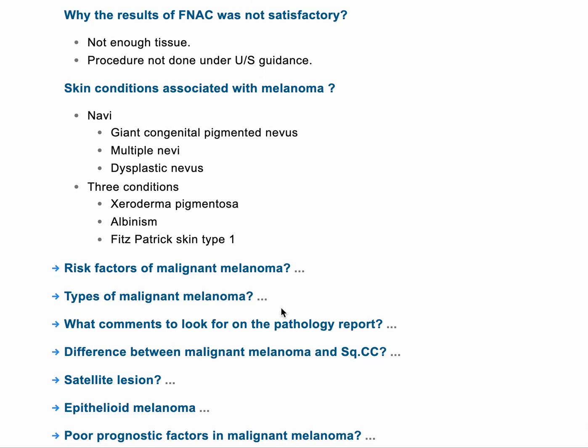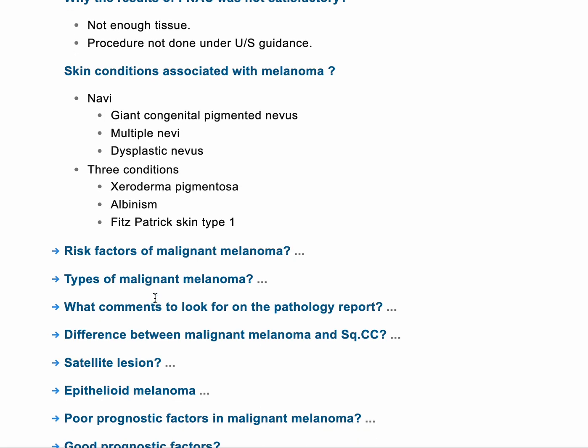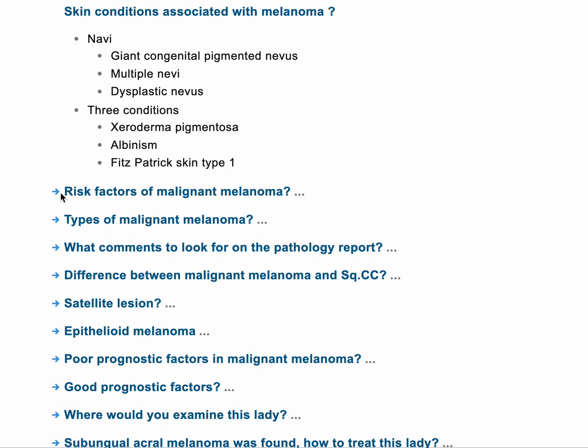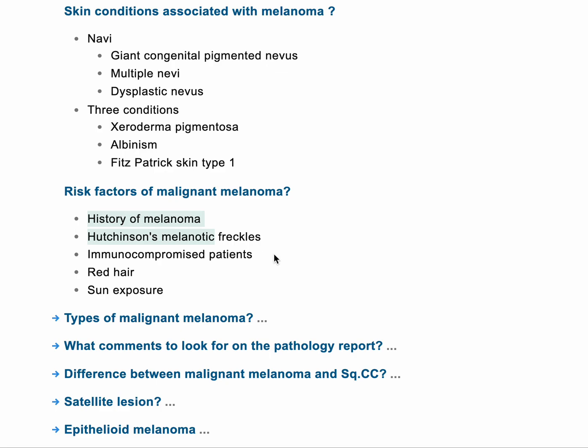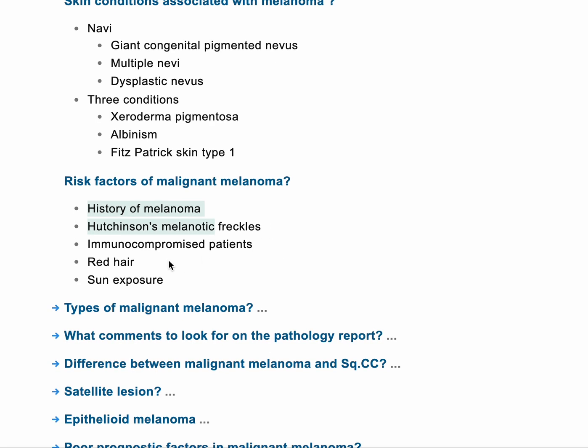What are the risk factors of malignant melanoma? That includes many risk factors: age — the older you are, the more likely to get malignant melanoma. Being immunocompromised or HIV-positive is also a risk factor. Being male is another risk factor. Having a family history of malignant melanoma, or a personal history of malignant melanoma, are also risk factors. Additionally, history of Hutchinson's melanotic freckle, being immunocompromised, and having red hair or sun-exposed areas.